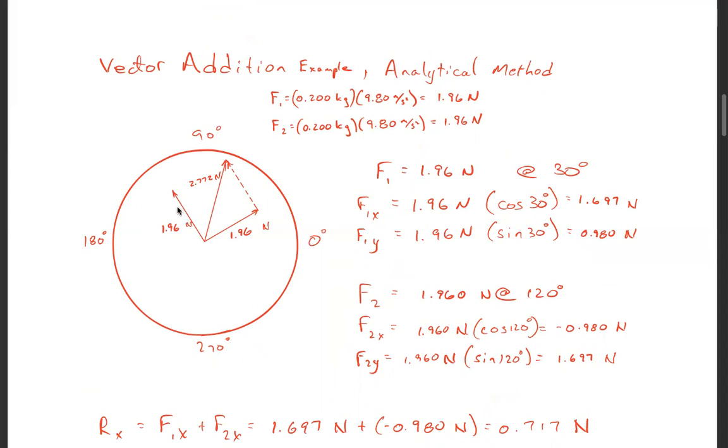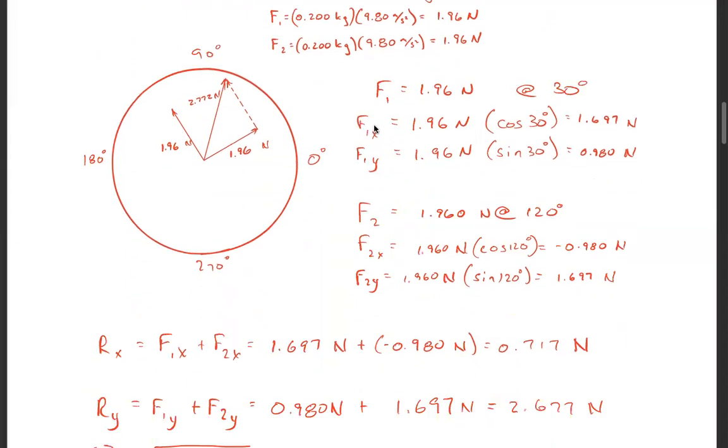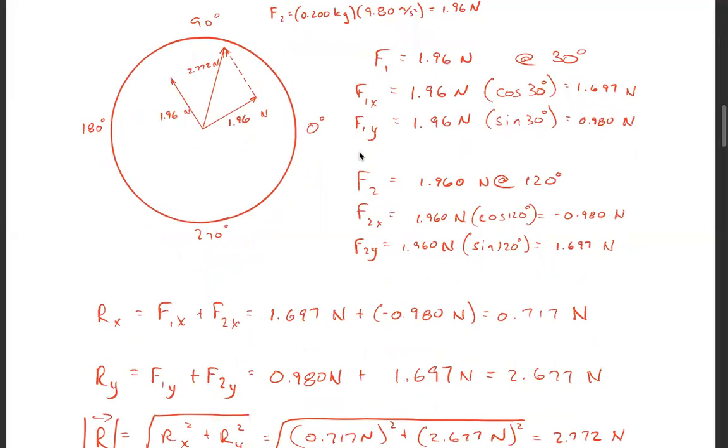To get the x value of F1, it's 1.96 times cosine of 30 degrees, which is 1.697 Newtons. F1y is using the sine, you get 0.98 Newtons.